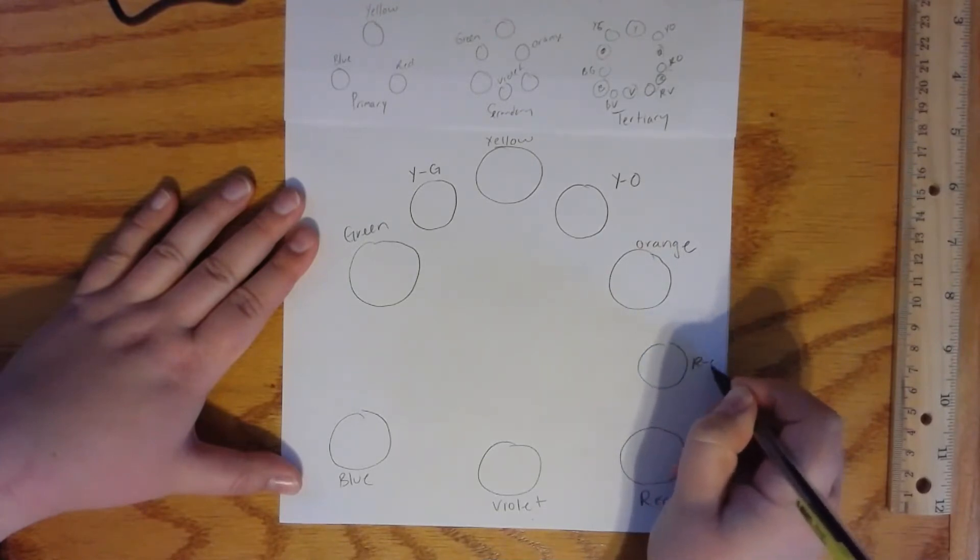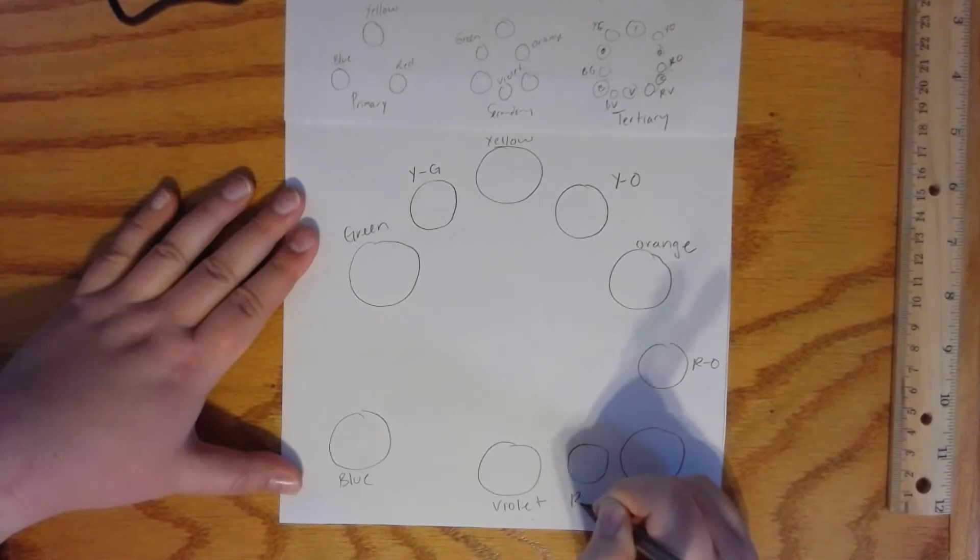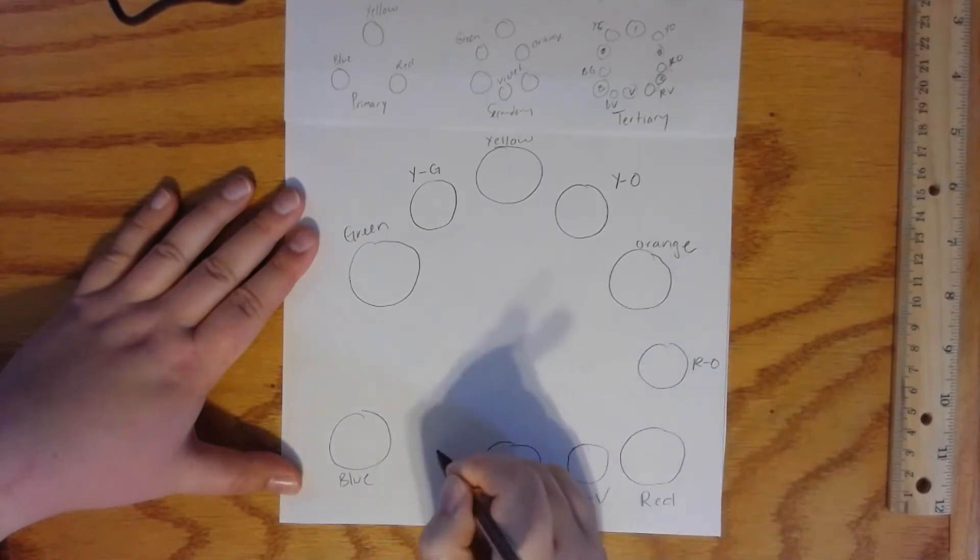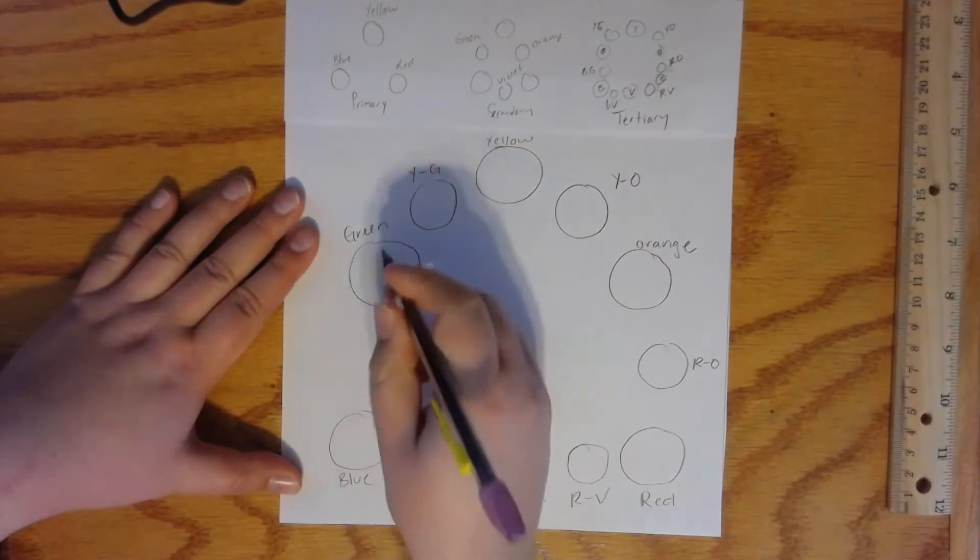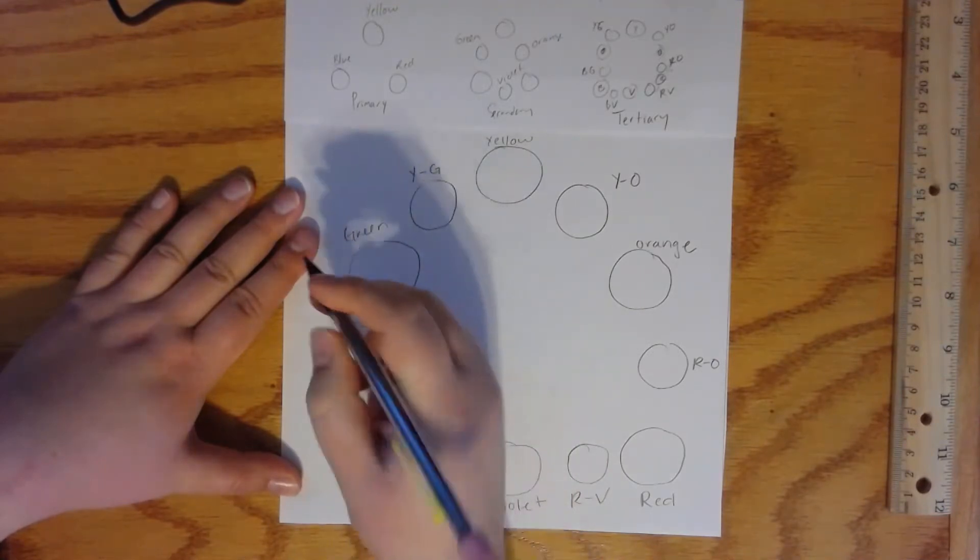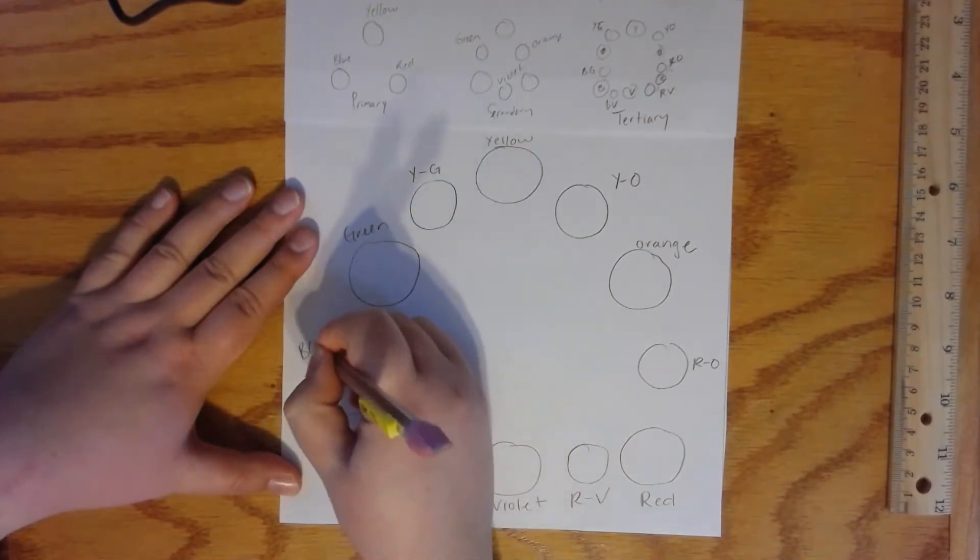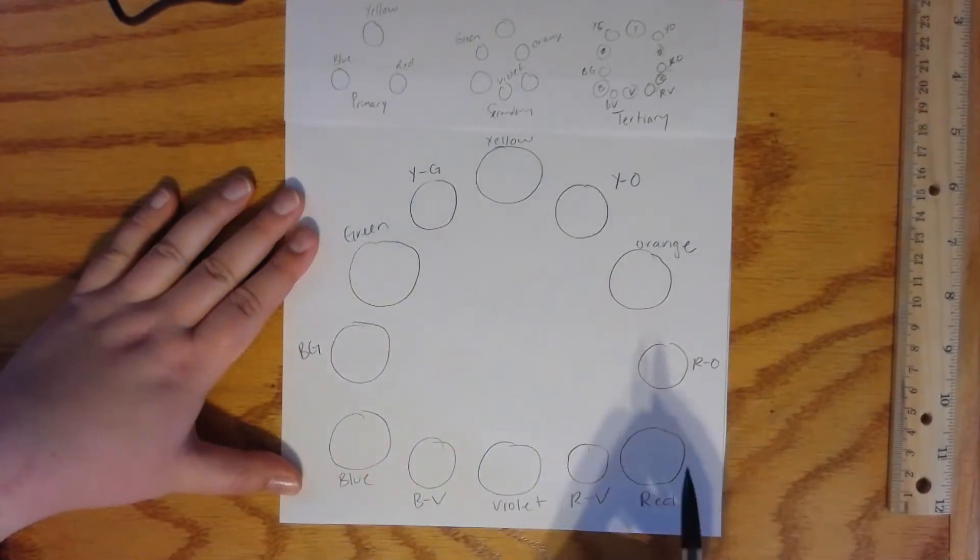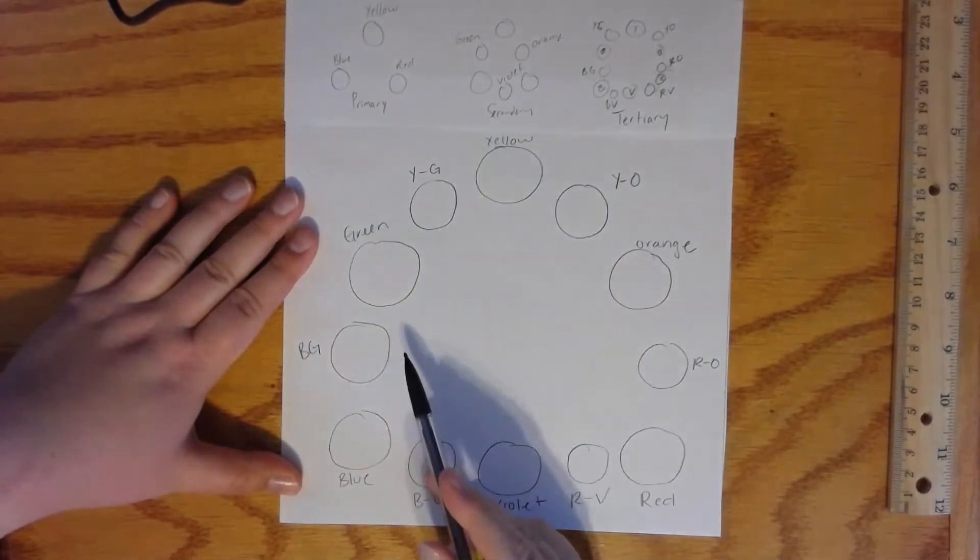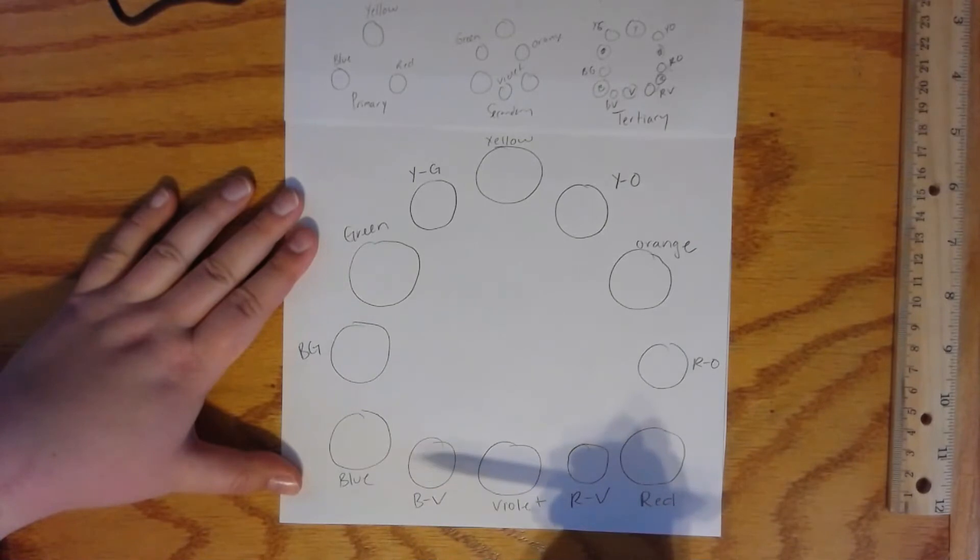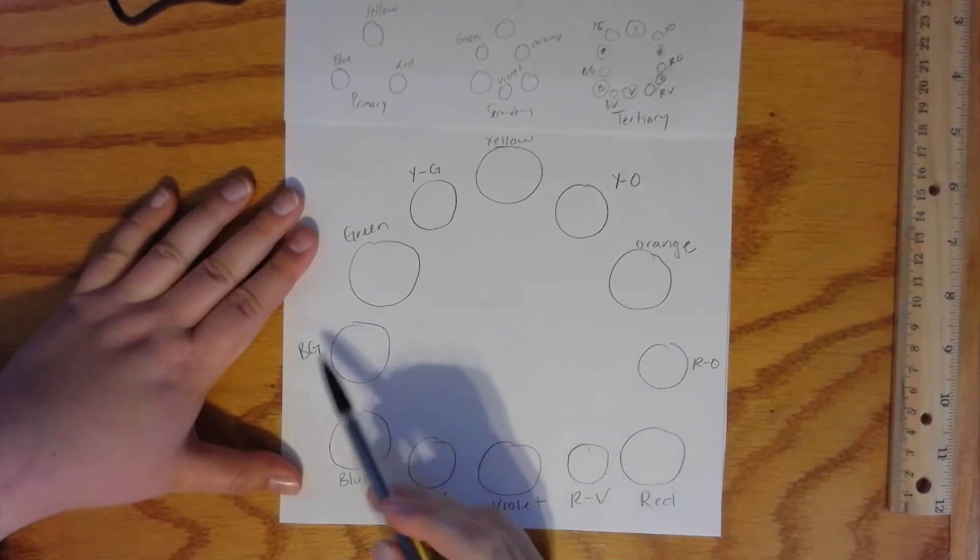Then between red and violet, red violet. Between blue and violet, blue violet. And between green and blue, blue green. And you'll notice I always say the primary color first and then the secondary color second for those ones.